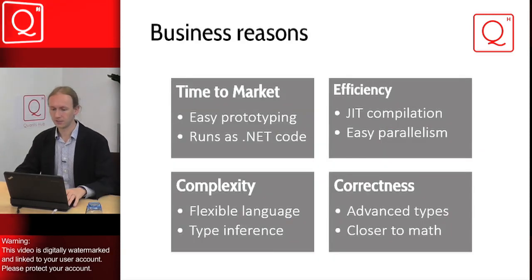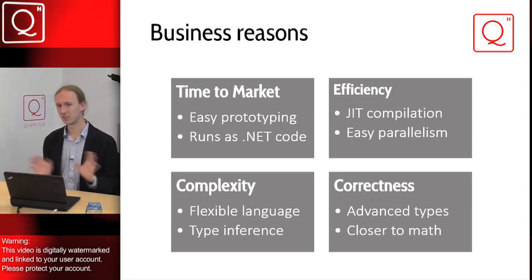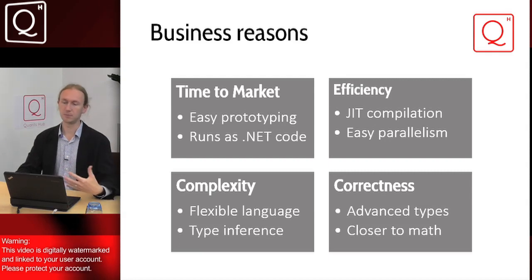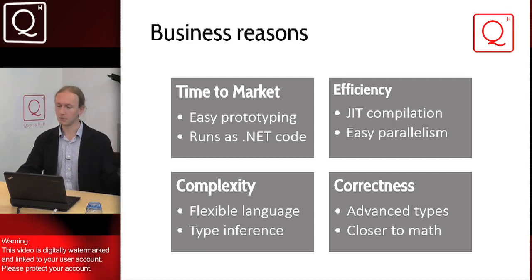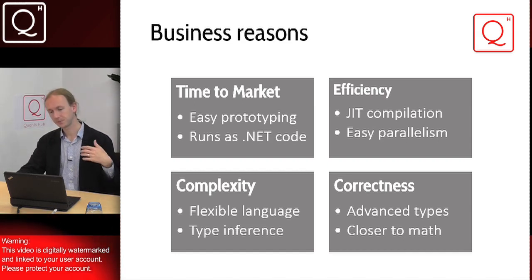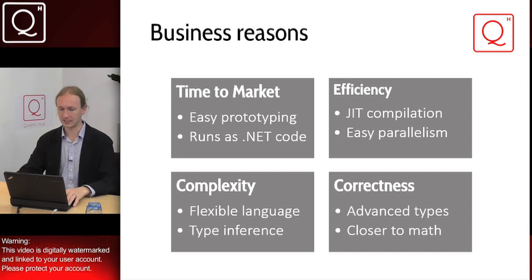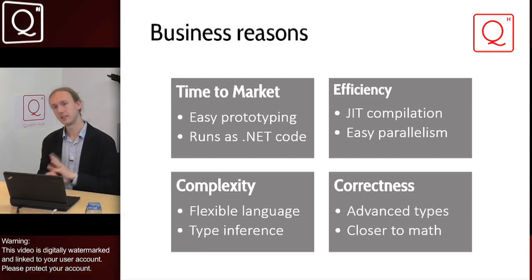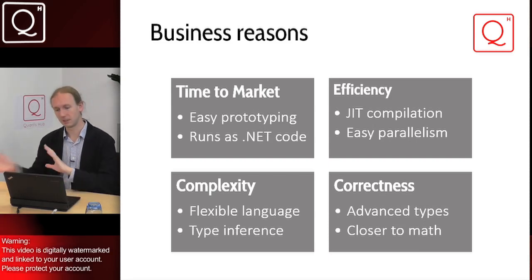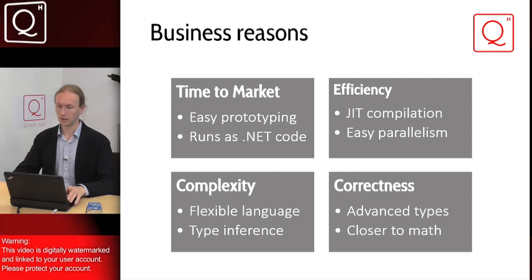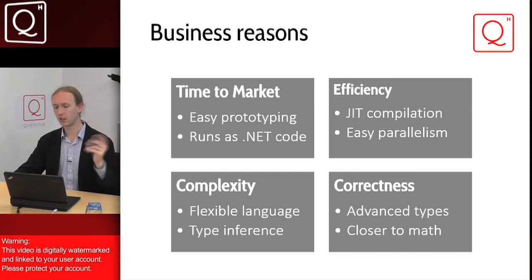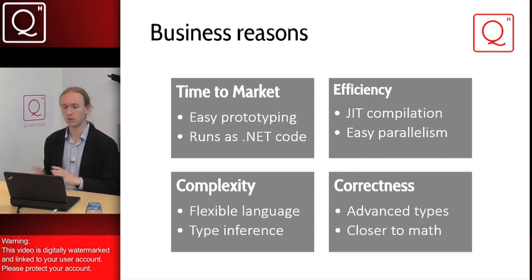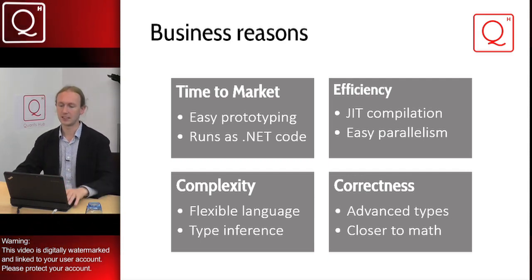Looking at the problem from a business perspective, there are four main things you get from using F-Sharp: time to market, efficiency, complexity, and correctness. Time to market is something you'll see in this lecture — you can easily prototype things, test how your code works, and then transition to running things as .NET code deployed to your systems. Efficiency comes from F-Sharp being compiled to native code using JIT compilation and being easy to parallelize thanks to immutability, which we'll see in the second lecture.